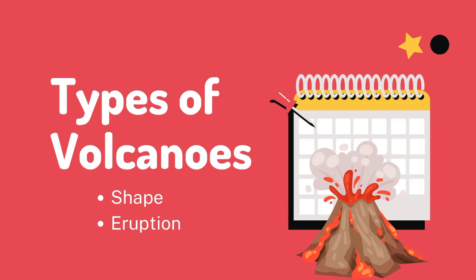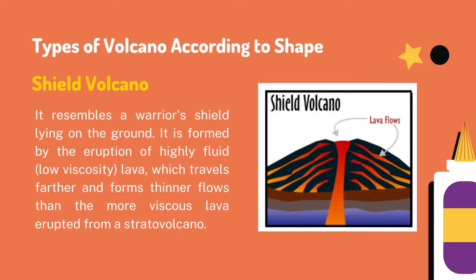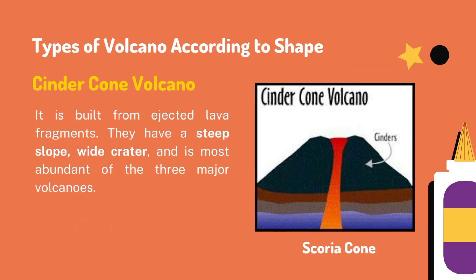Now let's proceed to the different types of volcanoes. Volcanoes can be categorized according to their shape and their eruption. Let us first look at the types of volcanoes according to shape. Shield Volcano — it resembles a warrior's shield laying on the ground. It is formed by the eruption of highly fluid or low-viscosity lava, which travels farther and forms thinner flows than the more viscous lava erupted from a stratovolcano.